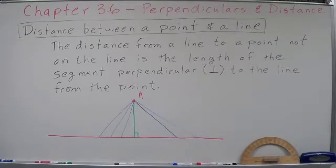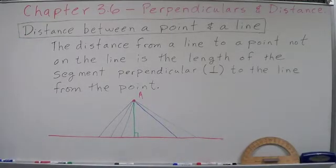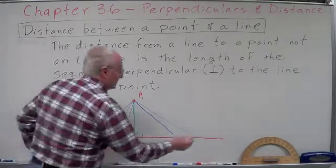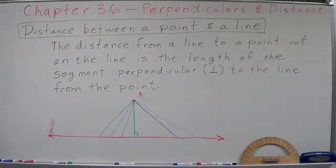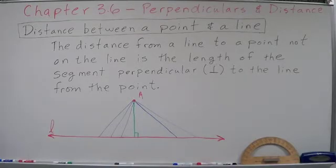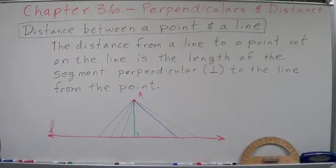In red, you have a line, and you have point A. In blue, you have several line segments drawn from point A to the line. Let's name that line L. Now, what we want is the distance from the point to the line, and that distance is going to be the length of the perpendicular segment from point A to line L. It's pretty obvious that that's going to be the shortest distance — anything other than that is going to be a little longer.